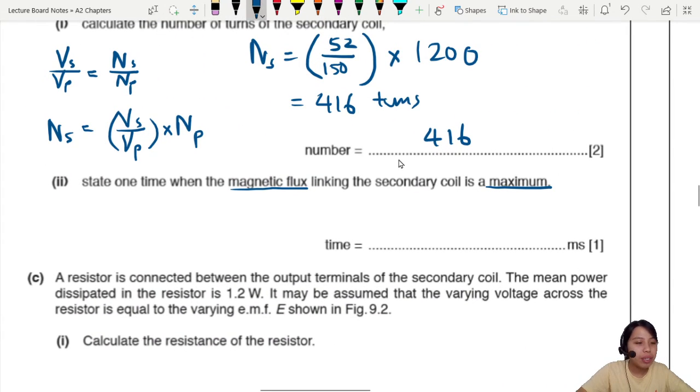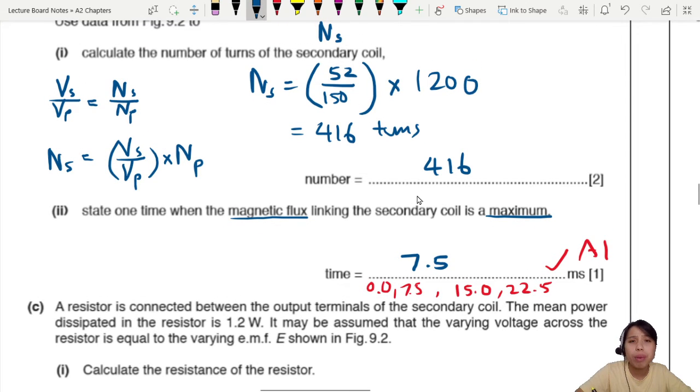Where is the magnetic flux maximum? 7.5ms. Other possible answers can include 0.0ms, anywhere where the EMF is zero. One mark for this. Final answer is one mark on top. Moving on.